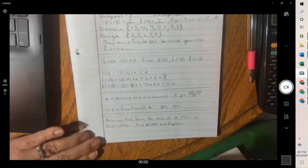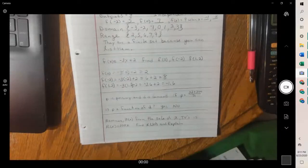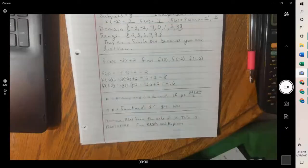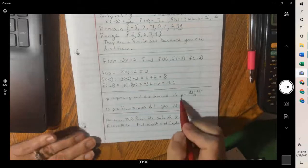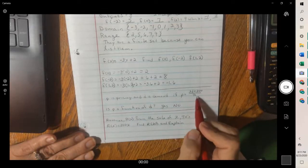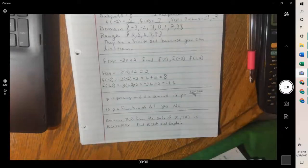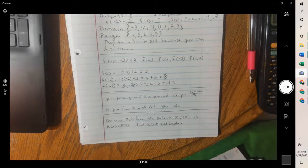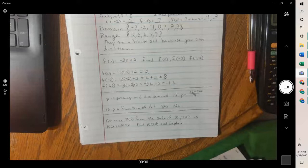The next one, p is pricing and d is demand. So this would be our pricing. This is our demand. If p equals 3d plus 200 over 71, is p a function of d? Well, what that means is every time we plug in a value for d, will we only get one answer for p? Yes or no.